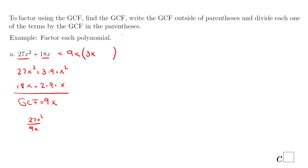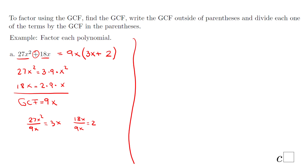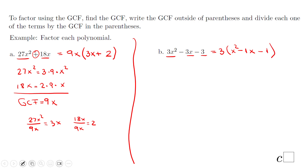So we get 3x. Then add the plus sign and find what times 9x equals 18x — divide 18x by 9x to get 2. So the factorization is 9x(3x + 2). For the trinomial, you notice all three terms share a common factor of 3, giving us 3(x² − x − 1), where the middle term's coefficient of 1 is implicit.